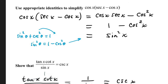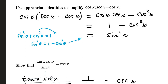Use appropriate identities to simplify cos(x)(sec(x) - cos(x)). Distribute: cos(x)·sec(x) - cos²(x). Cosine and secant are reciprocals, so their product is 1, giving 1 - cos²(x). That expression can be traded out for sin²(x) using the Pythagorean identity, correctly modified by subtracting cos²(x) from both sides.